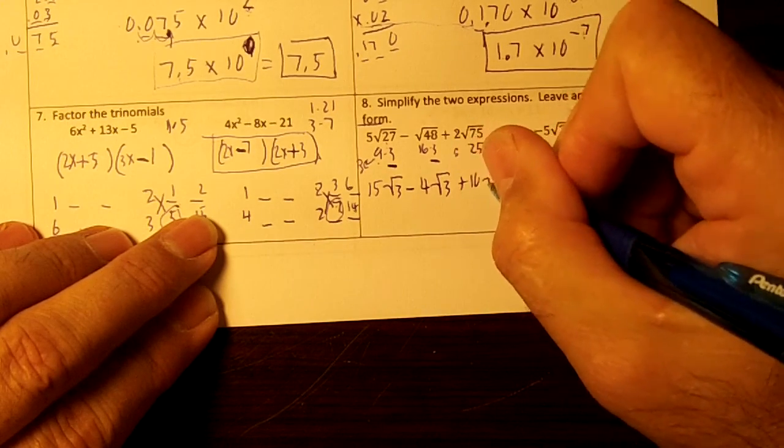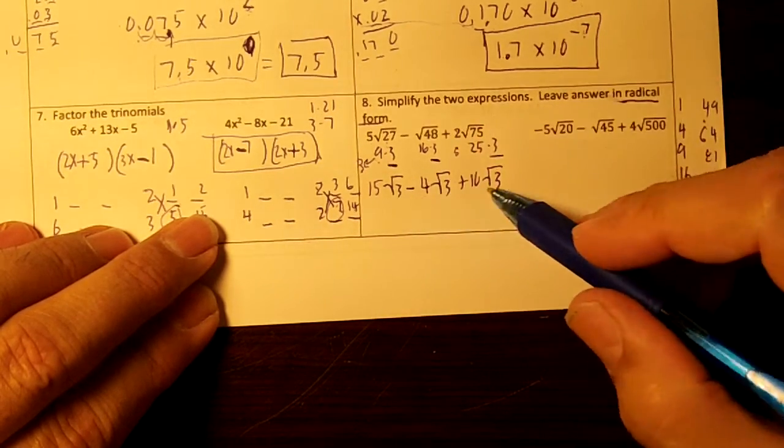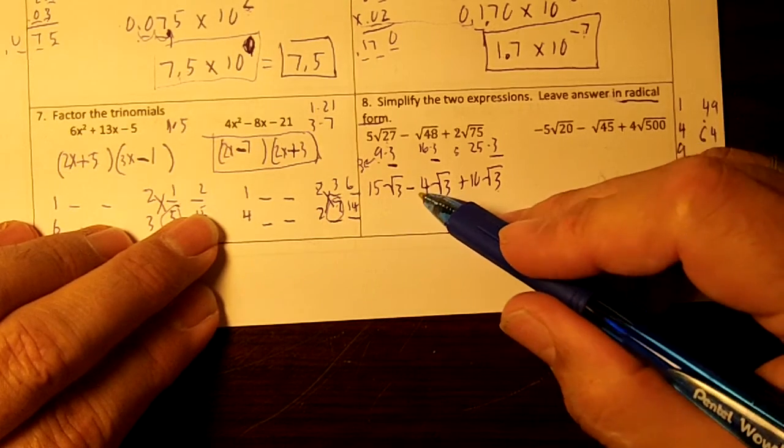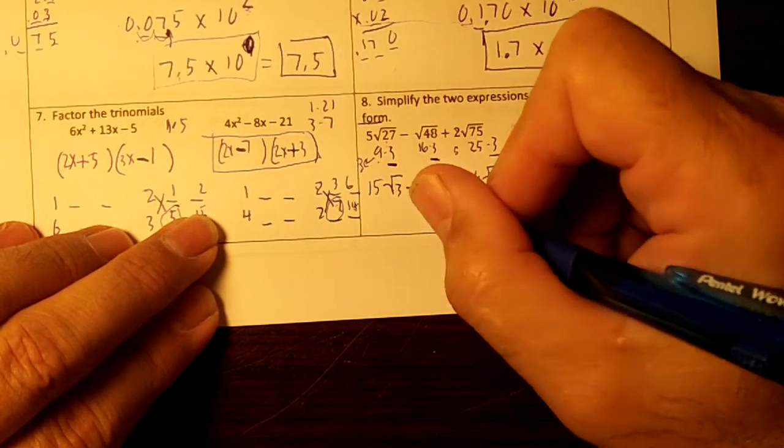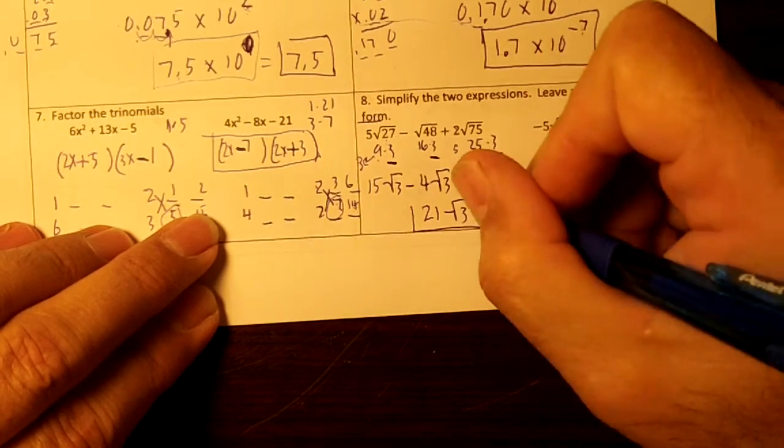5 times 2 is 10. And notice these are all square root of 3. So I could combine them. 15 minus 4 is 11. And 11 plus 10 is 21. So I have 21 square root of 3.